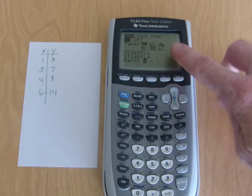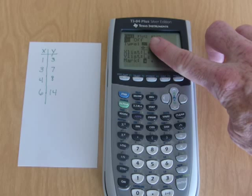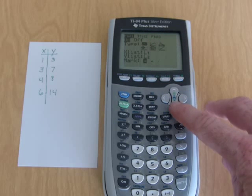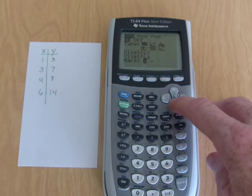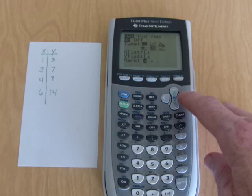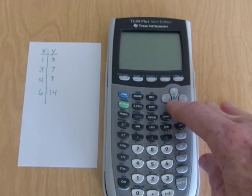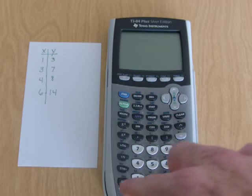I'm going to make sure it's on. I have the first type of graph highlighted, which is a scatter plot. I come down here and make sure my list one is the x list and my list two.